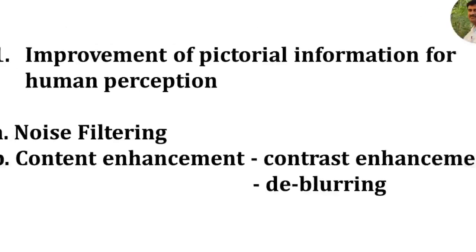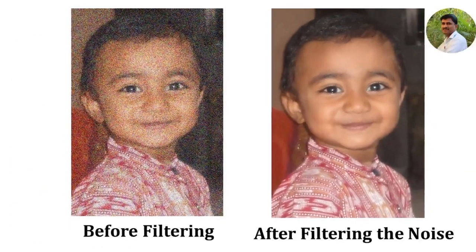Considering the first application — improvement of pictorial information for human perception — we shall discuss two major examples: noise filtering and content enhancement. You can observe some noise in the first image. By using some computer algorithm called filtering, it is possible to remove this noise from the image, and thereby we can improve the pictorial information.